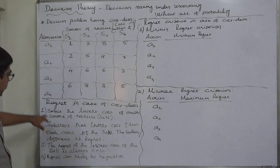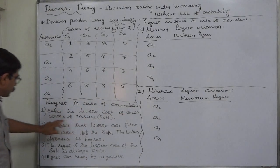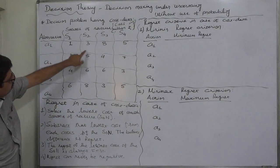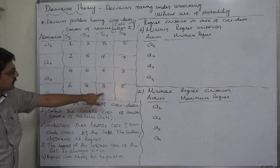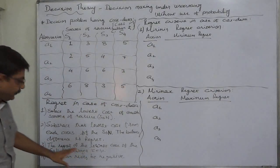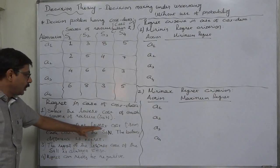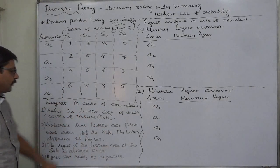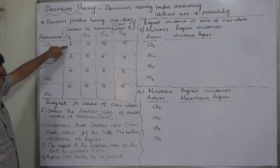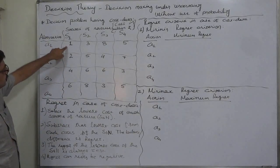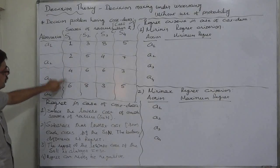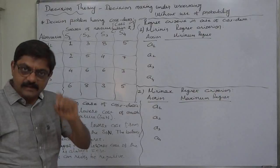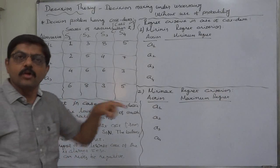The process is as follows: select the lowest cost of each state of nature. In case of S1 it is 1, in case of S2 it is 3, in case of S3 it is also 3, and in case of S4 it is 3. Then subtract that lowest cost from each cost of the state of nature. So for S1: 1−1=0, 2−1=1, 4−1=3, 6−1=5. The result is the regret of costs.